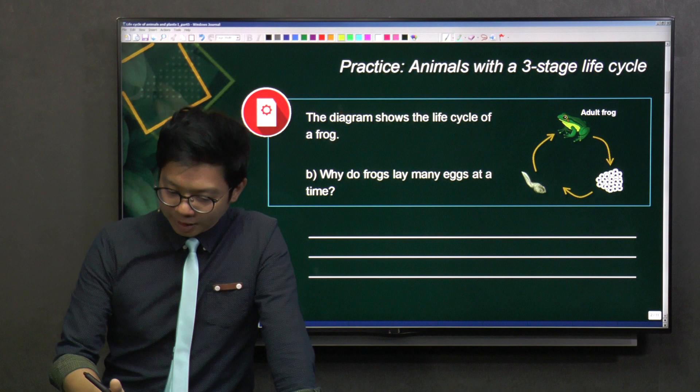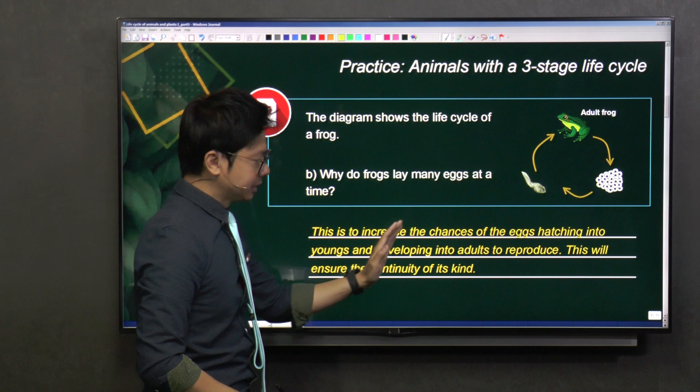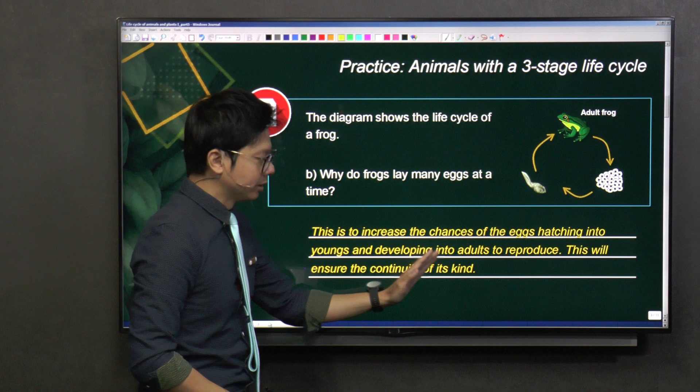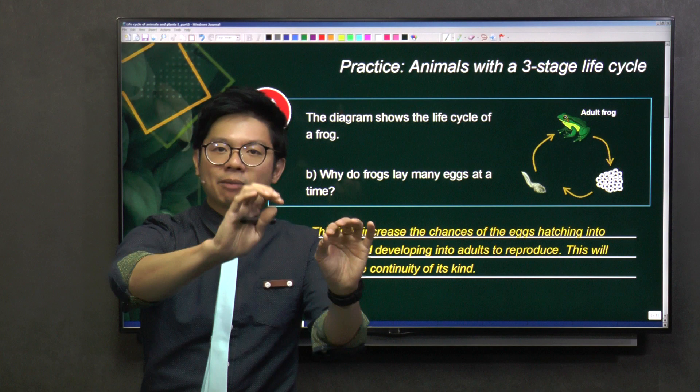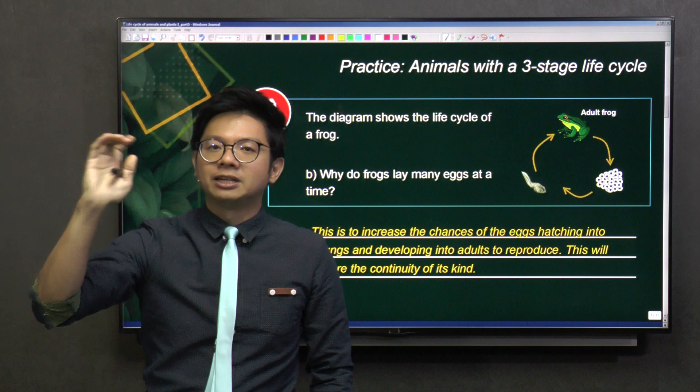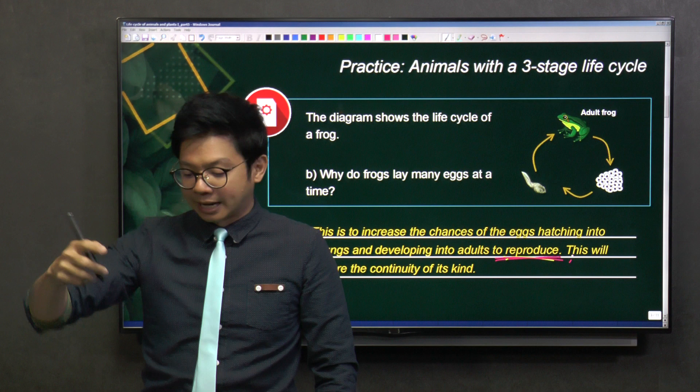So how do we put that in words? We have to say that the first thing is that it's to increase the chances of the eggs hatching into youngs and developing into adults to reproduce. A lot of people just say to increase the chance of survival, but that's not good enough. You have to talk about if it's an egg, you have to describe what happens after the egg. It becomes a young, and from the young it has to go on to an adult, and then after that the keyword is reproduce.